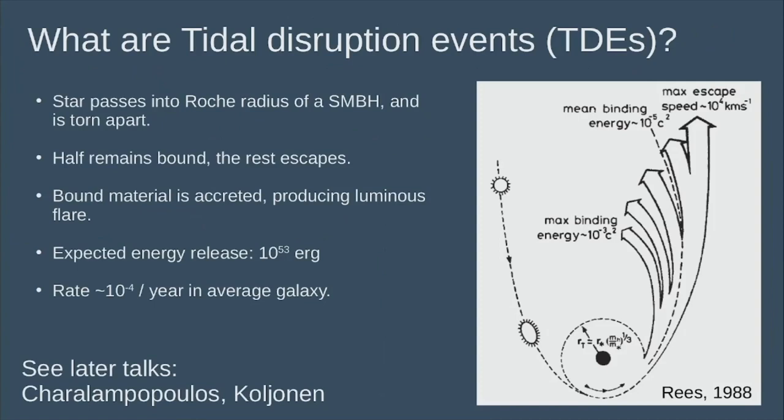What is a TDE? Here's the schematic from the old paper by Reese where this was predicted as a phenomenon. We have some star coming a bit too close to some supermassive black hole, and it goes inside the Roche radius where the tidal forces from the supermassive black hole are too strong for the star to remain gravitationally bound. And so it's torn apart.